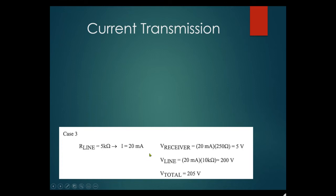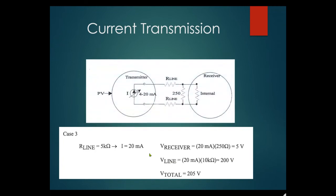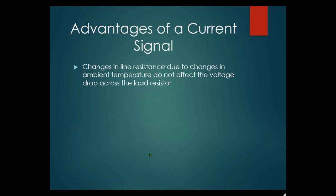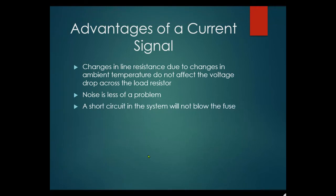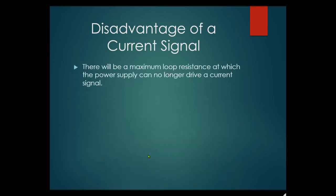Advantages of a current signal: changes in line resistance due to ambient temperature changes do not affect the voltage drop across the load resistor. Noise is less of a problem — the 1 to 5 volts is dropped across the 250 ohm resistor at the receiver. A short circuit won't blow a fuse because it's such a low current. Disadvantage: there is a maximum loop resistance at which the power supply can no longer drive the current signal — too much resistance means not enough voltage to push 4 to 20mA through.